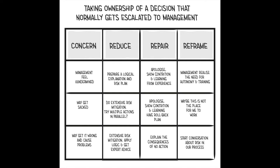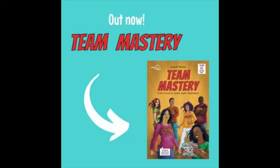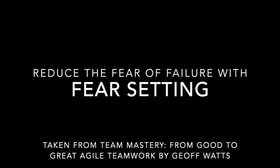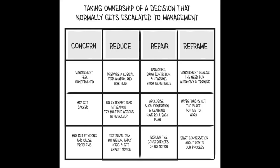For example, if I'm worried about taking ownership of a decision that normally gets escalated to management, I'd start by listing the specific consequences that I'm worried about as a result of taking this action. I might be concerned that management feel undermined and will thus make my life difficult, or that I'll get sacked, or make a mistake that causes problems for the users.